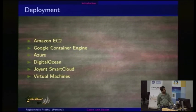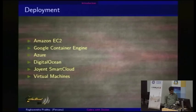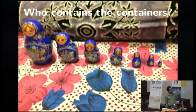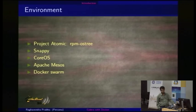For deployment platforms, we've been looking at EC2, which was recently announced at the AWS conference; Google Container Engine already has it; Digital Ocean provides CoreOS containers; and Joyent has something called Smart Cloud. As for container environments — like Russian dolls, you can put one inside the other — there's Project Atomic with its RPM-OSTree, CoreOS, Apache Mesos, and Docker Swarm. Apache Mesos and Swarm are not necessarily complete environments, but they provide tooling to manage containers.